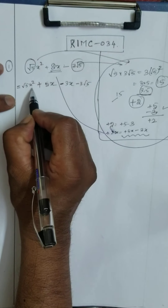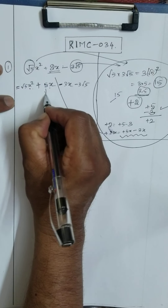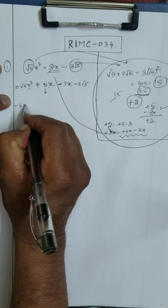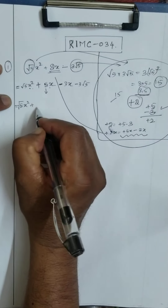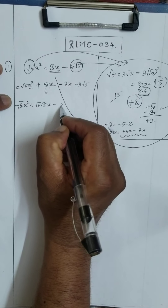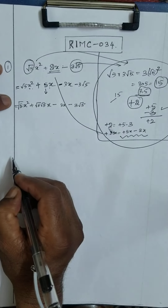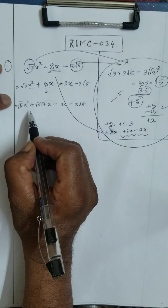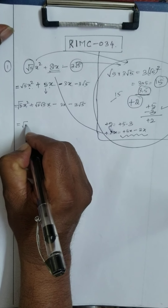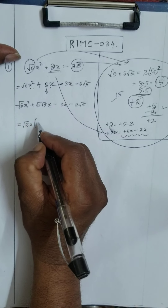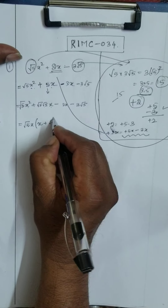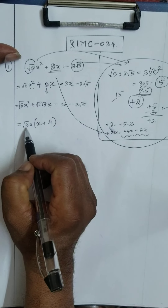Now what is the next step? x I can take as common factor. This 5 can also be written as √5 into √5. Therefore I will write it: √5·x² plus 5 can be written as √5·(√5 into √5)·x minus 3x minus 3√5. Now what factors can you take? x I can take, √5 also I can take — root 5x I can take as common factor. I take common factor: x(√5·x plus √5). See if I multiply, I will get back this one. Correct.